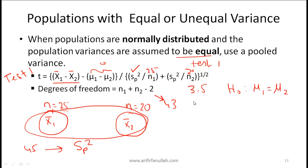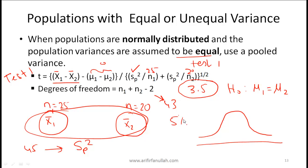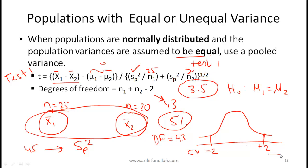This works like the simpler tests discussed earlier. With a t-statistic of 3.5 at a 5% significance level, you consult the t-table using degrees of freedom equal to 43. The critical values are approximately minus 2 and plus 2. If the test statistic falls outside those bounds, you reject the null hypothesis; if it falls between them, you fail to reject.